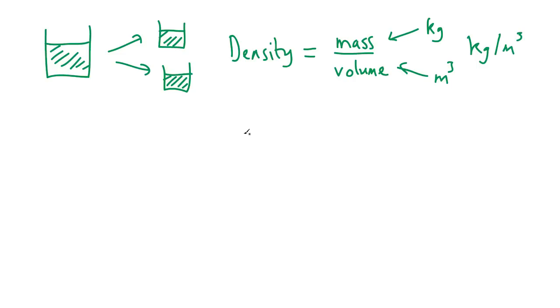And so we have units of kilograms per cubic meter for density. Now this is going to be a lot more useful for describing fluids because the density of a fluid is going to be common under the same conditions. Both of these samples of fluid would have the same density. And so I can calculate the mass simply by taking the volume of fluid that I have and multiplying it by the density of the fluid.